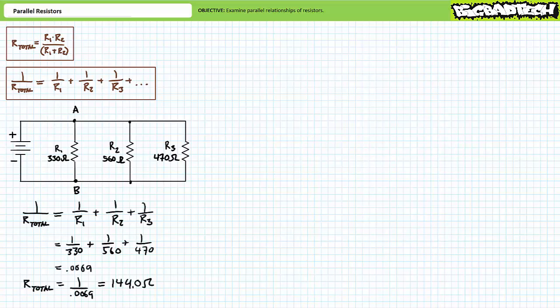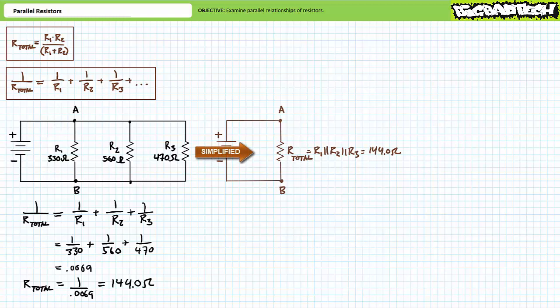There are two ways of calculating total resistance. The easiest and most direct means is using the more universal parallel resistance formula. 1 over 330 plus 1 over 560 plus 1 over 470 is roughly 0.0069. To obtain the final resistance we need to invert this value: 1 over 0.0069 is roughly 144 ohms. As anticipated, the total resistance of this parallel combination of three resistors is indeed less than the two-resistor configuration and less than the smallest resistor. The source would be none the wiser if the three resistors were swapped out for a single 144 ohm resistor.